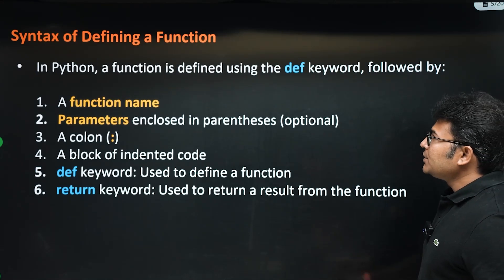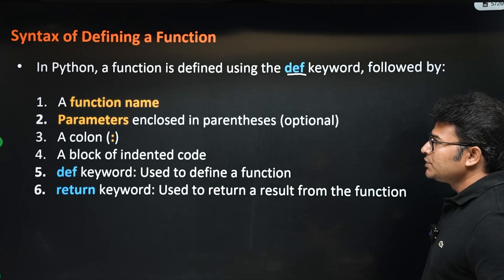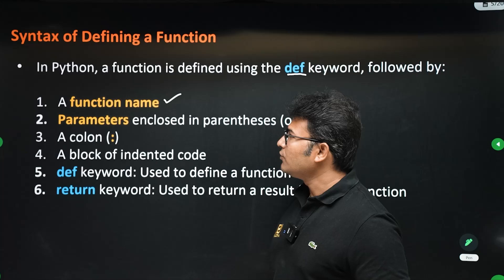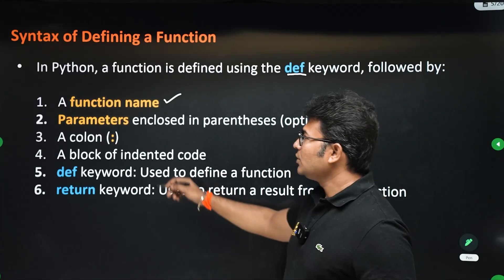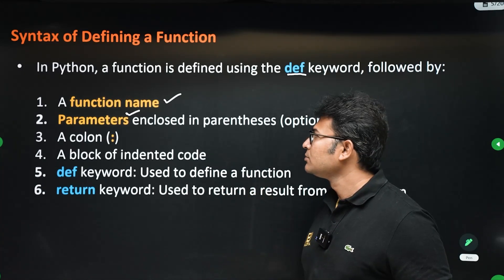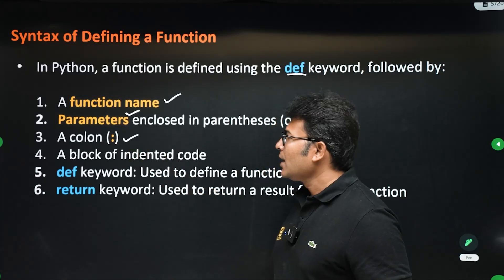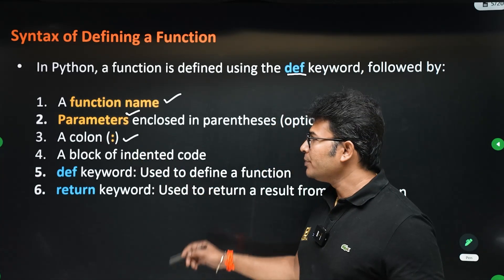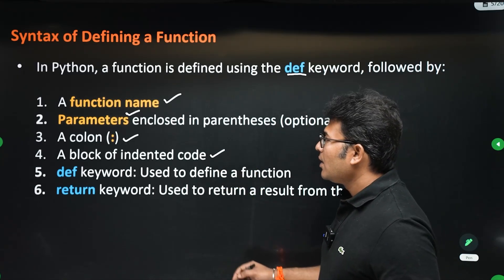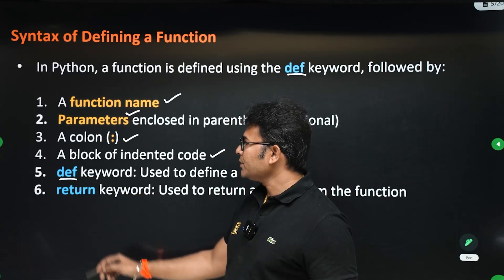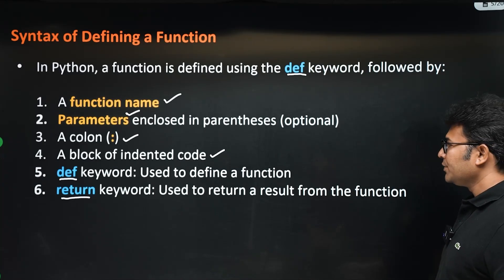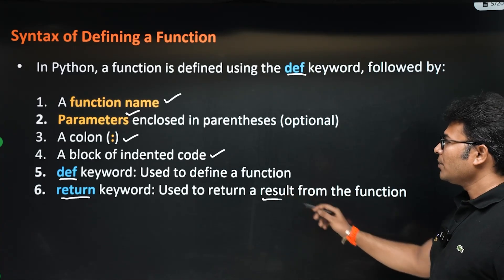How are you going to define a function? A function is defined by the keyword `def`. After `def` you write the function name, then the parameters enclosed in brackets, then a colon. Whatever code you write inside the function should be indented by four spaces. The `return` keyword is used to return a result from the function.